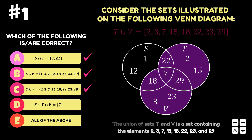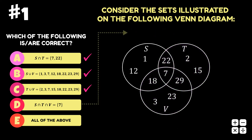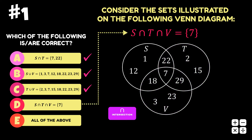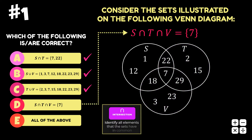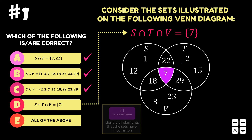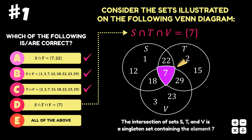Finally, option D is the intersection of sets S, T, and V. Looking at the Venn diagram, the intersection of sets S, T, and V is the area shared by all three sets, and the only element in the shared area is 7.